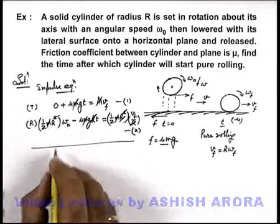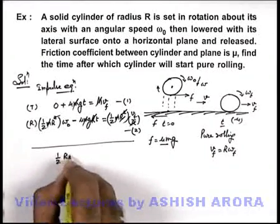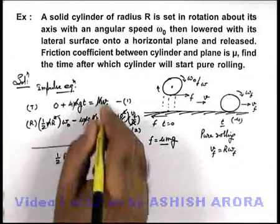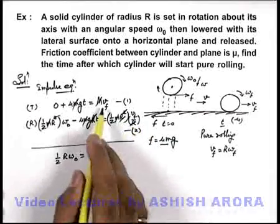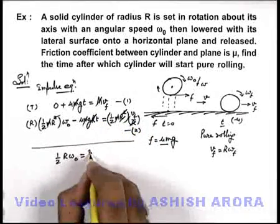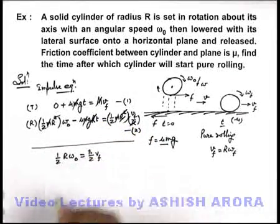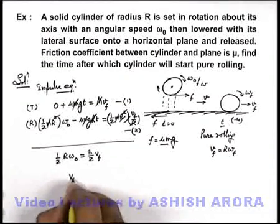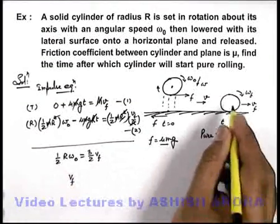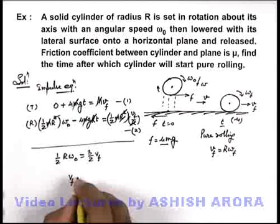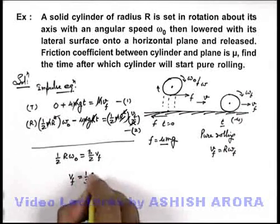The result we'll be getting on left hand side is half r omega not, and on right hand side of equality we'll be getting vf plus vf by two, it is three by two vf. From here we'll get the final linear speed when the cylinder will start pure rolling is equal to one by three r omega not.